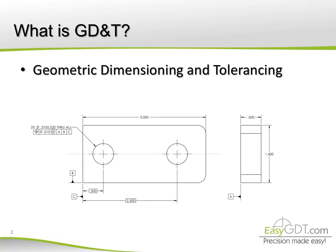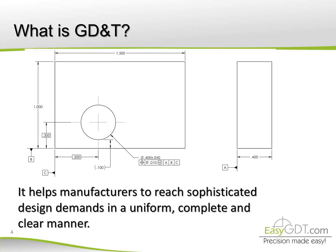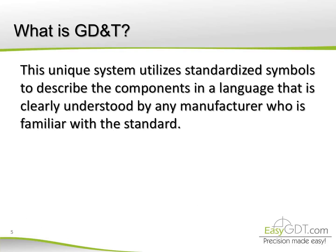What is GD&T? GD&T stands for Geometric Dimensioning and Tolerancing. It can be defined as an illustrated language for design and as a functional technique of production and inspection. It helps manufacturers to reach sophisticated design demands in a uniform, complete and clear manner. This unique system utilizes standardized symbols to describe the components in a language that is clearly understood by any manufacturer who is familiar with the standard.